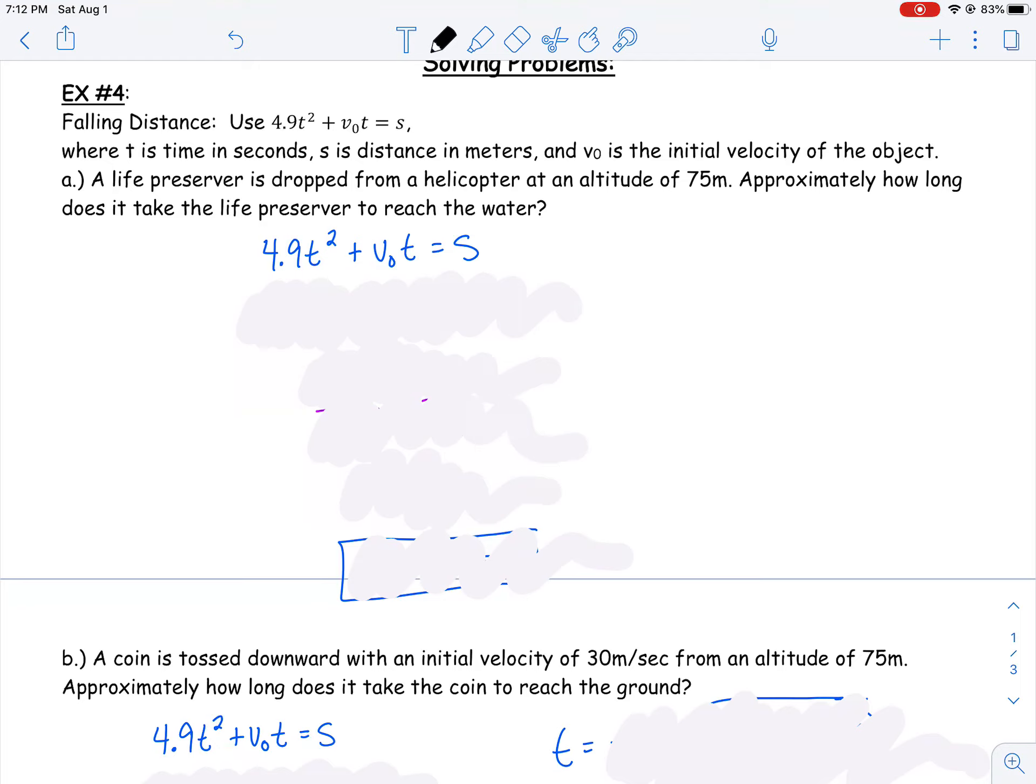Let's look at a few examples. Part a: a life preserver is dropped from a helicopter at an altitude of 75 meters. Approximately, how long does it take the life preserver to reach the water? So we have this formula, and we need to know some variables. We need t, we need v₀, and we need s. Or at least two out of those three, so we can solve for the missing one. Well, we know it was dropped from the helicopter, which means our initial velocity is just zero. It's just dropped from the helicopter.